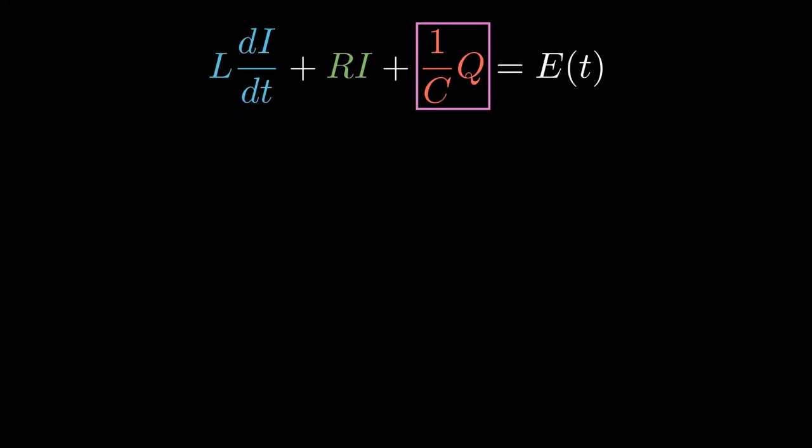Finally, for the capacitor, we have 1 over C times Q, which is 1 over the capacitance times the charge. E of T is the sum of all three of these terms, and it represents the total voltage drop.